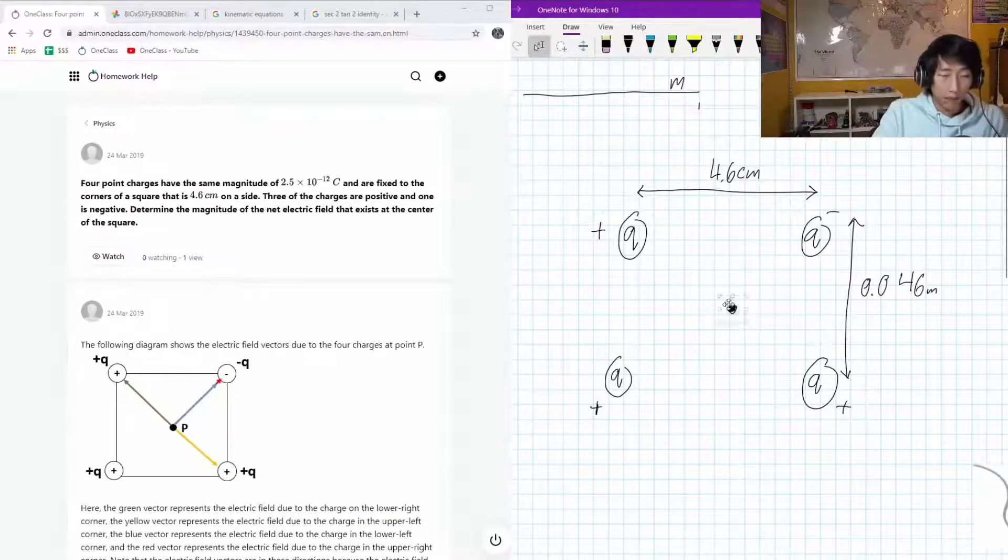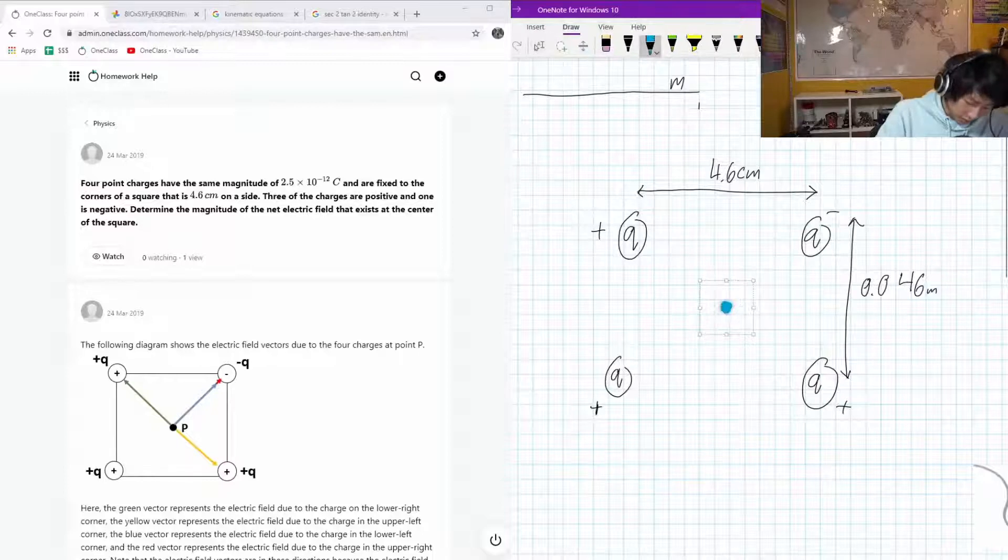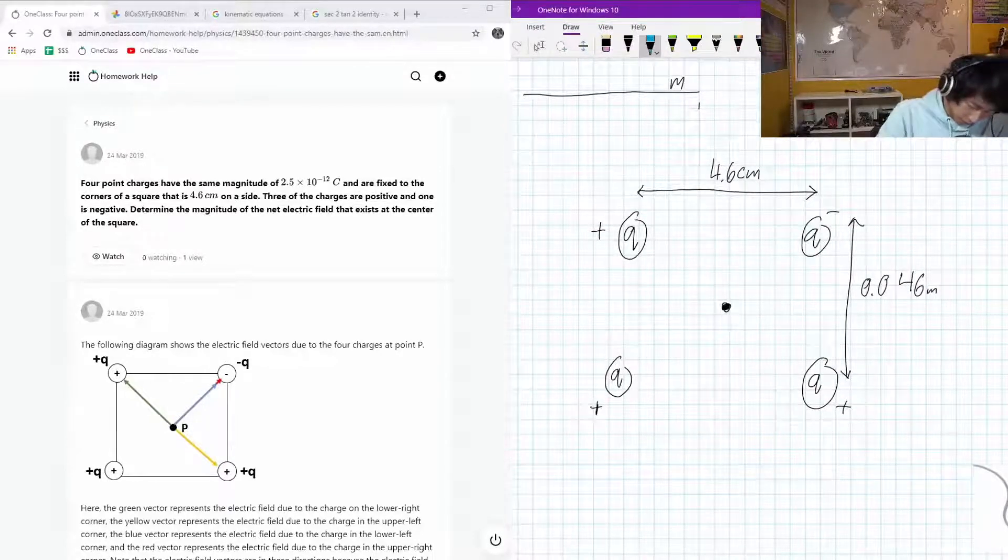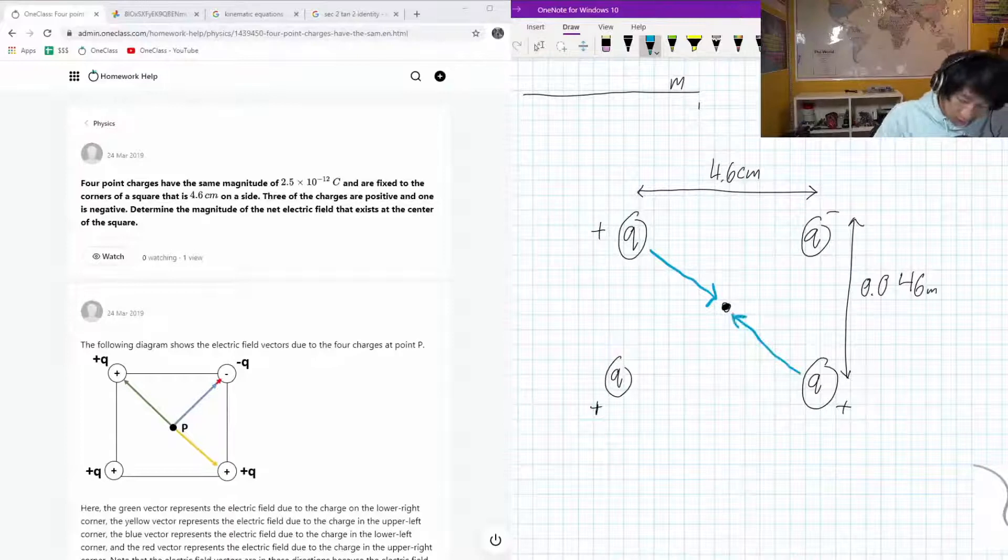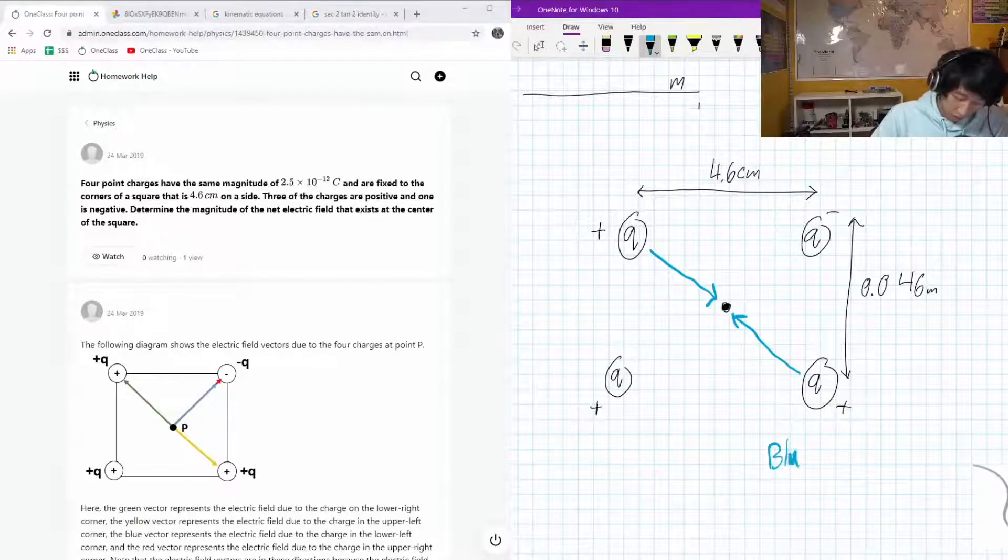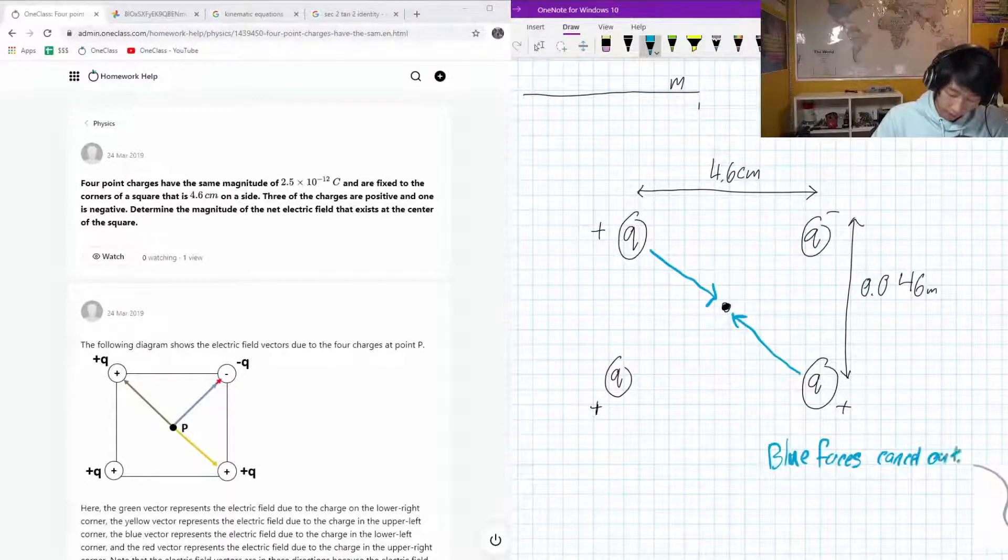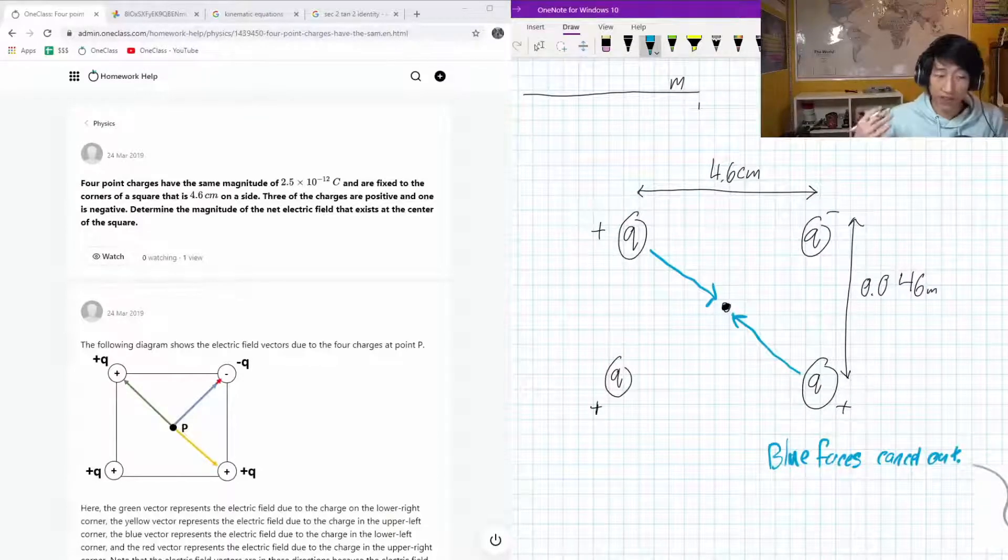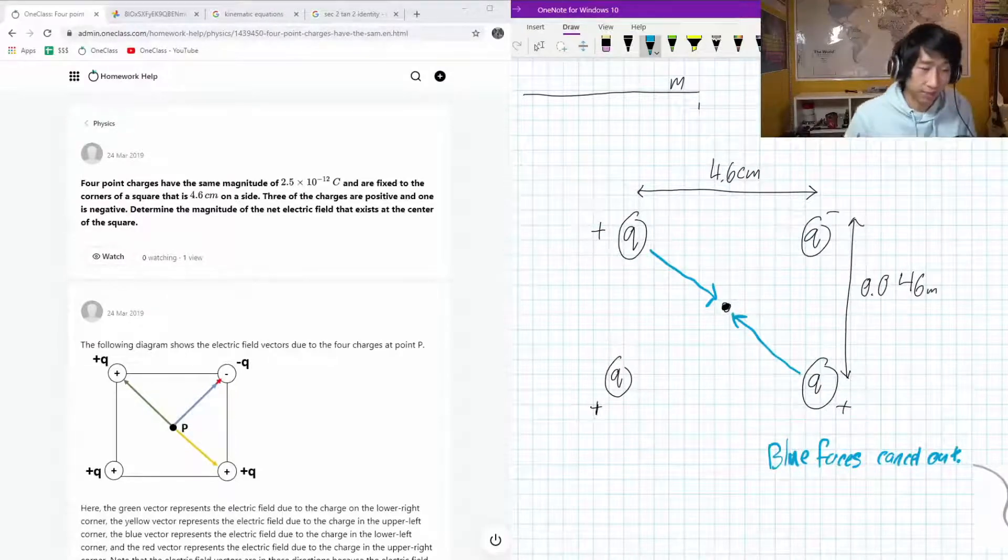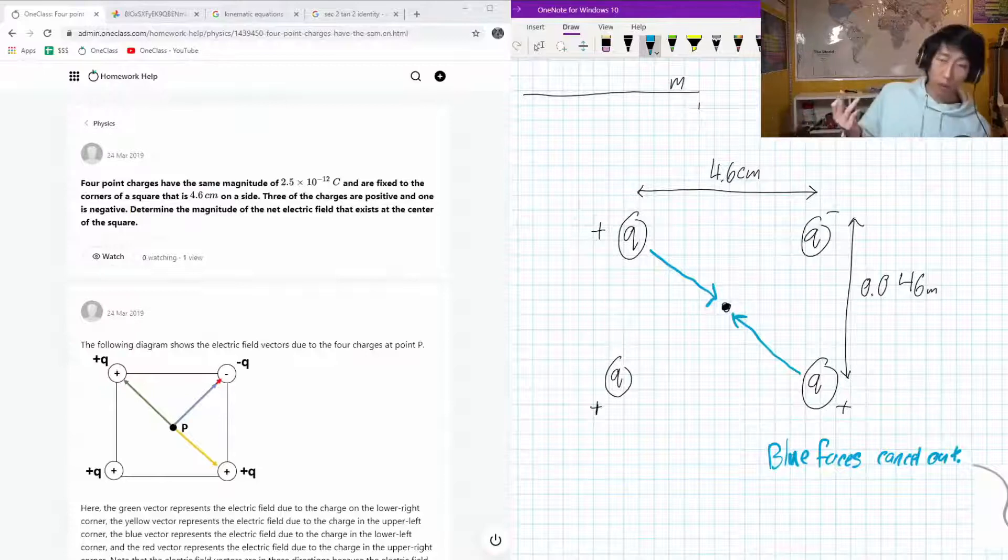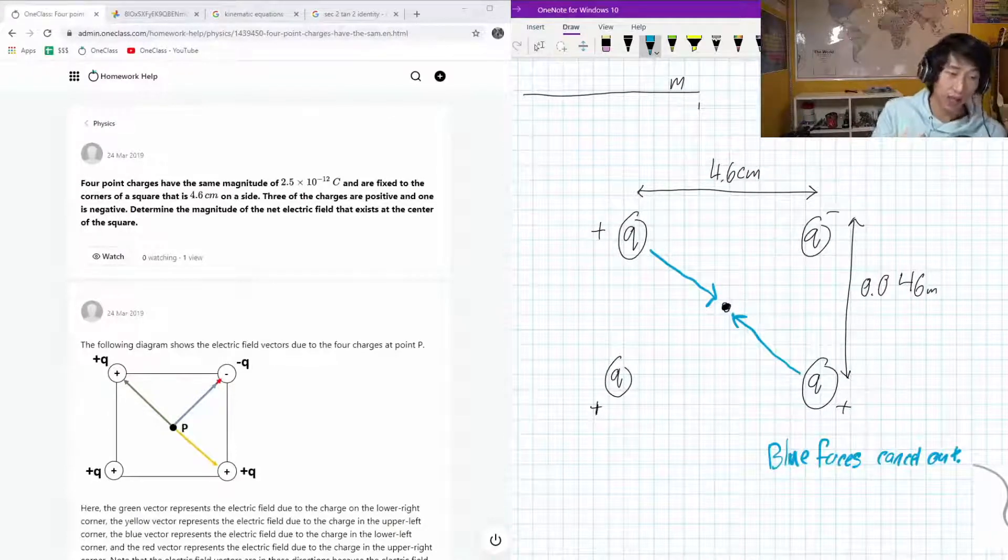Because this little point in the middle is perfectly in the middle, we know that the forces here - the blue forces cancel out. They are perfectly the same charge and the same distance away from each other, so if we were to incorporate them into the same calculation, they would neutralize each other. One would be positive and one would be negative, and they would perfectly be equal to each other, so the result of those net blue forces is zero.